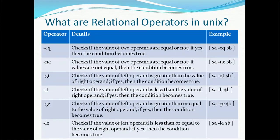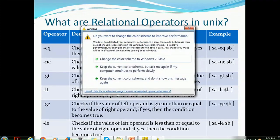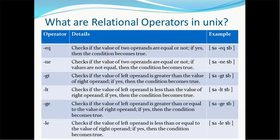We have EQ, which stands for equal. It checks if the value of two operands are equal or not — if yes, then the condition becomes true. NE checks the not-equal condition. It checks if the value of two operands are equal or not, and if the values are not equal then the condition becomes true.